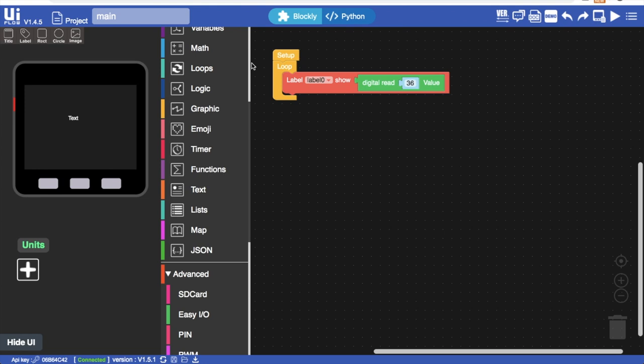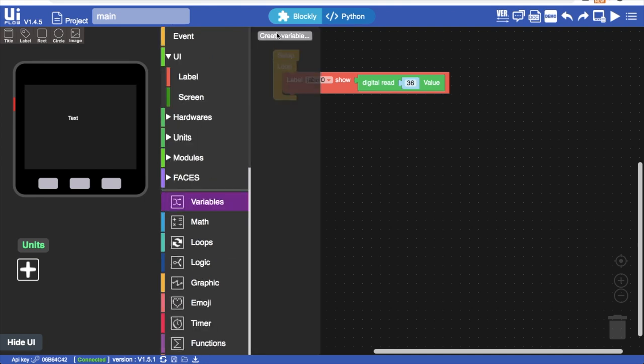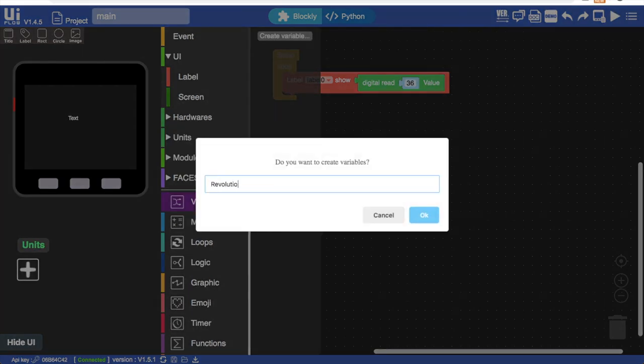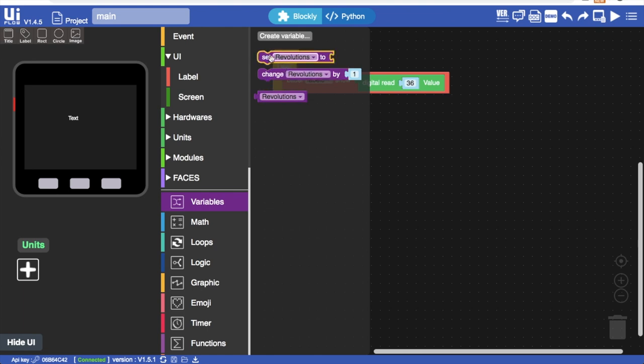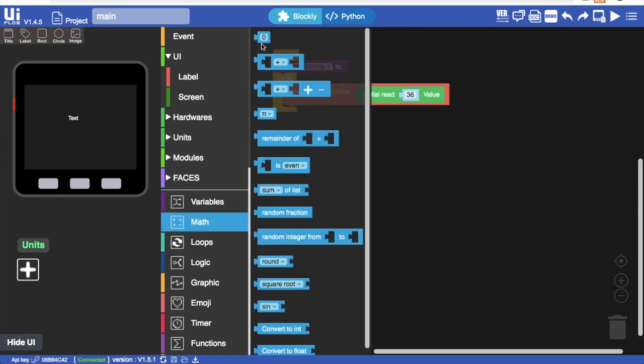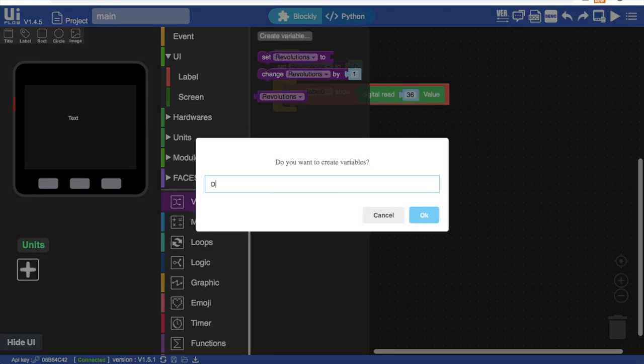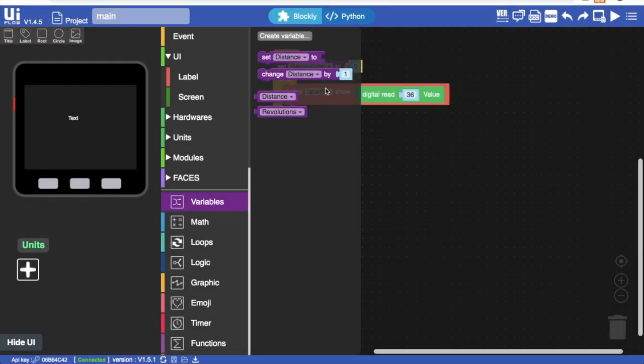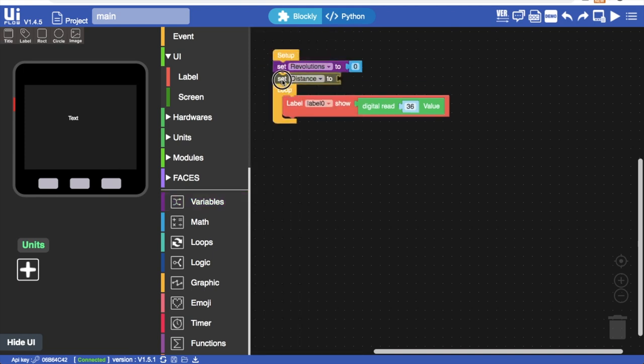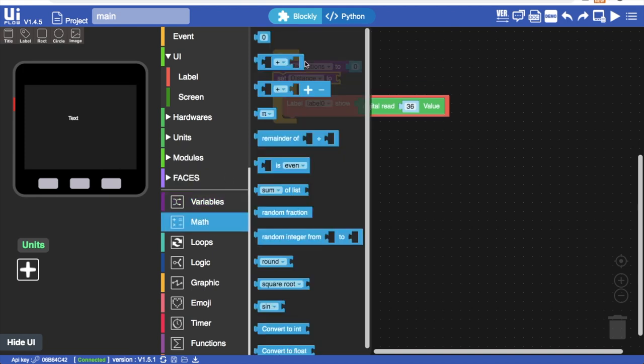Now we're back in UI flow we can start to build up our program. Firstly we'll create a variable to hold the amount of revolutions of our wheel. We'll then initialize that in the setup phase of our program. We'll then create another variable which I'll call distance to hold the amount of distance that we have traveled. Again we'll initialize this to zero.